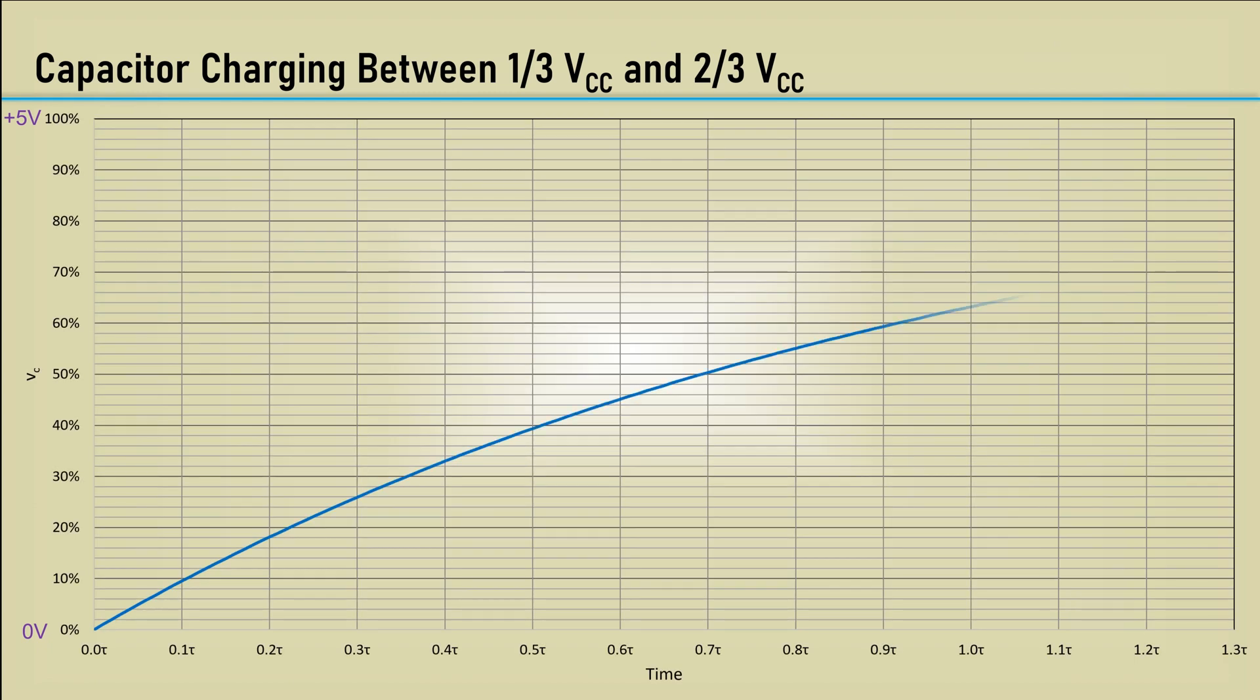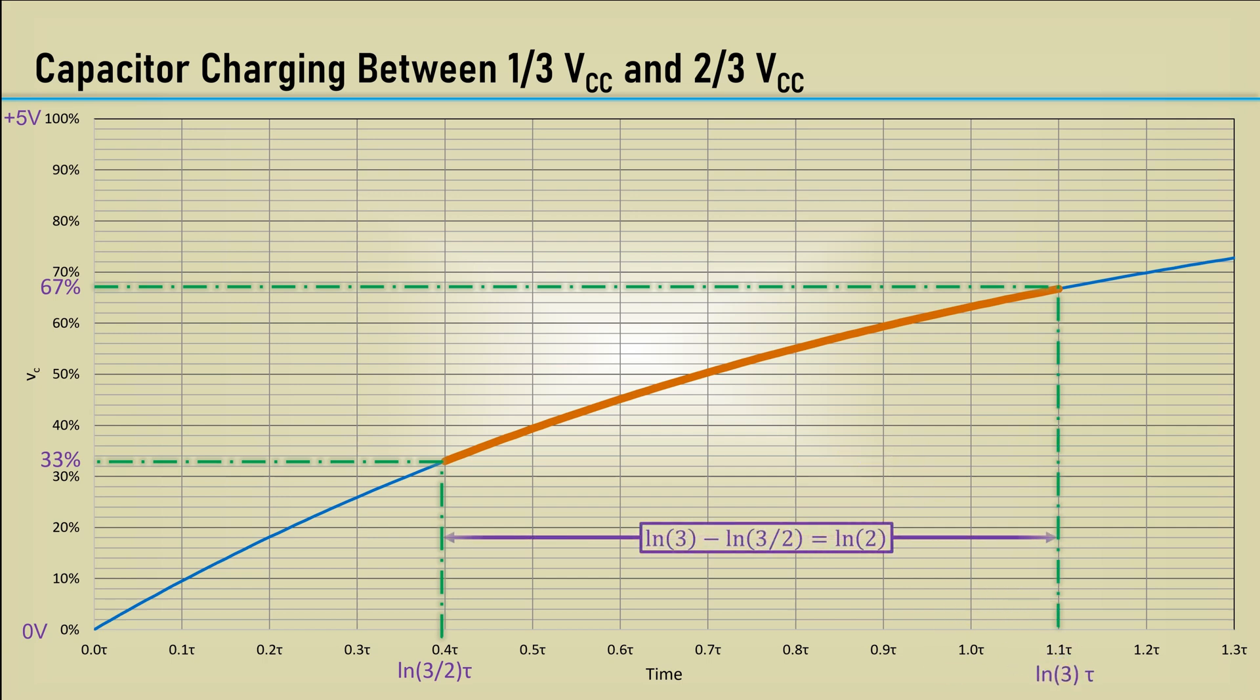Recall from the previous astable multivibrator video, this chart shows the capacitor charging between one-third VCC and two-thirds VCC, which is between the natural log of 3 halves and the natural log of 3. The current in the resistor is highest when the capacitor first starts to charge and decreases once charged. Now with the diode in series with the resistor, the varying current through the diode will cause the diode to have a different voltage drop across it. We need to determine the average voltage across the resistor and use that current to determine the diode drop.